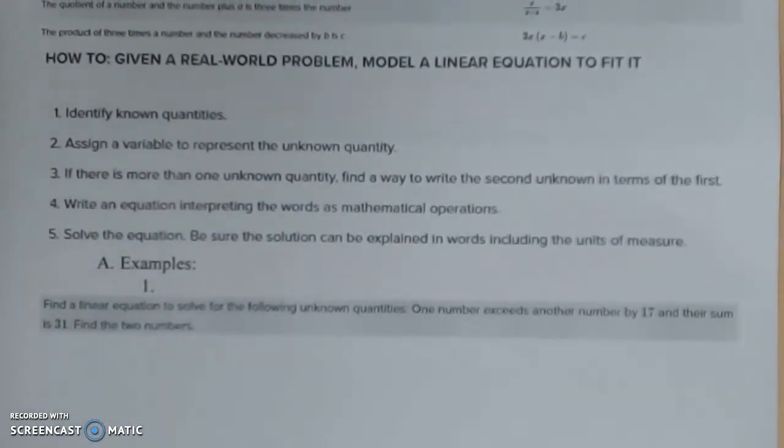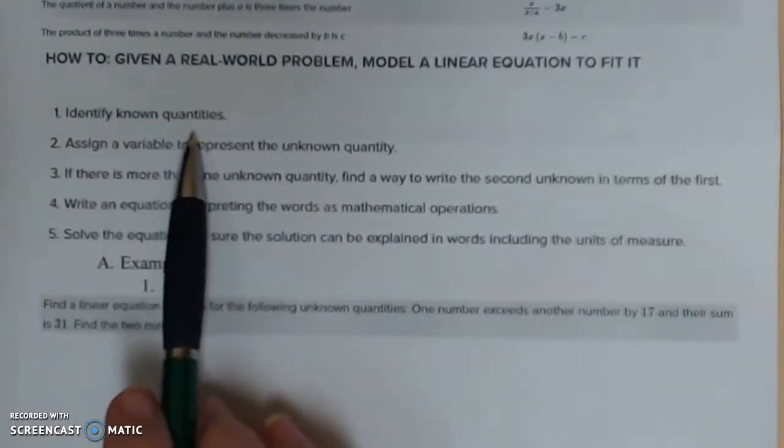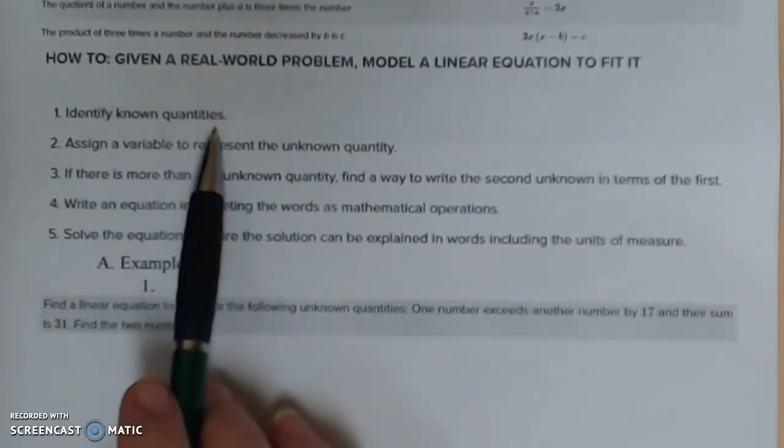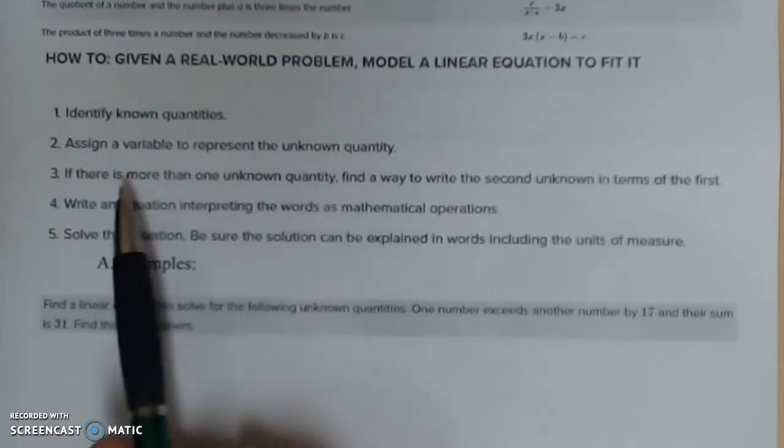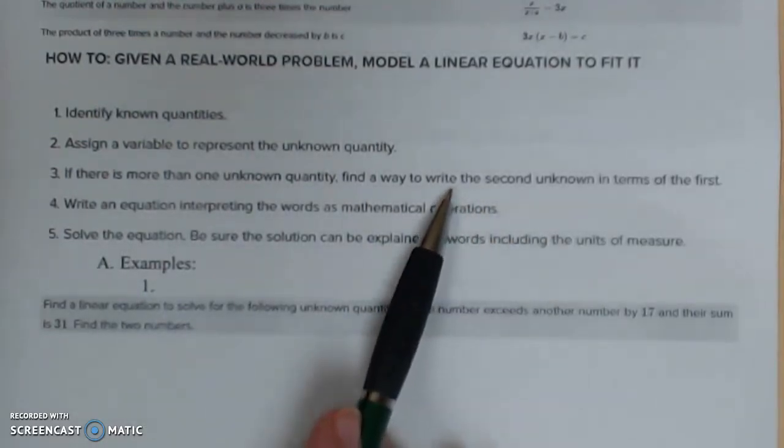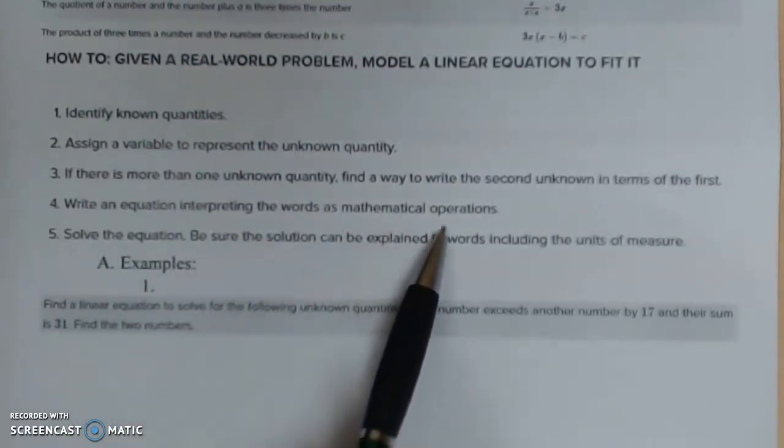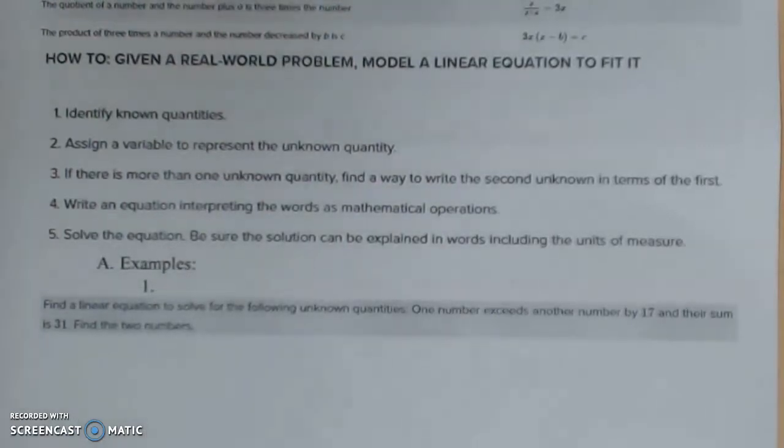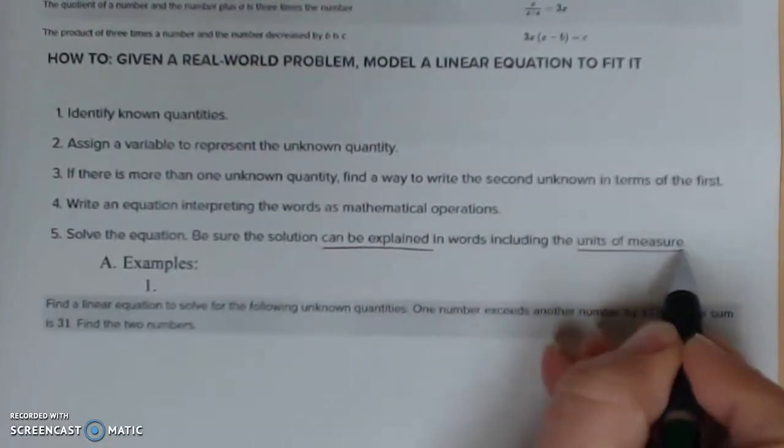It does give us a process as we look through this. How to given a real world problem make a linear equation to fit it. One, assign some known quantities. I either use x or if they call it like company a and b call it a and b. Don't confuse yourself. Assign a variable to represent the unknown quantity. If there's more than one unknown find a way to write the second in terms of the first. If they say one number is bigger than another number don't over assign variables. Try to use the ones you've already have. Write the equation, interpreting the words as mathematical operations and then solve.